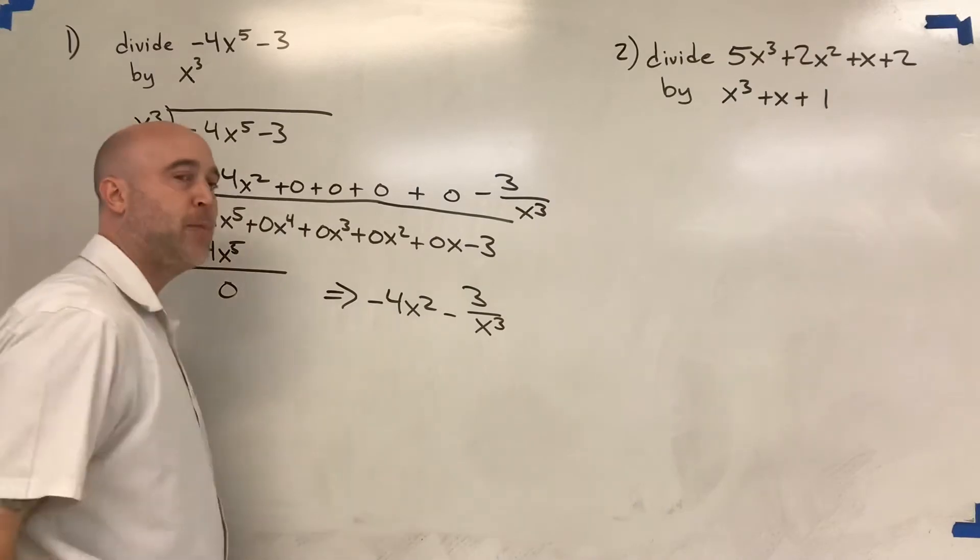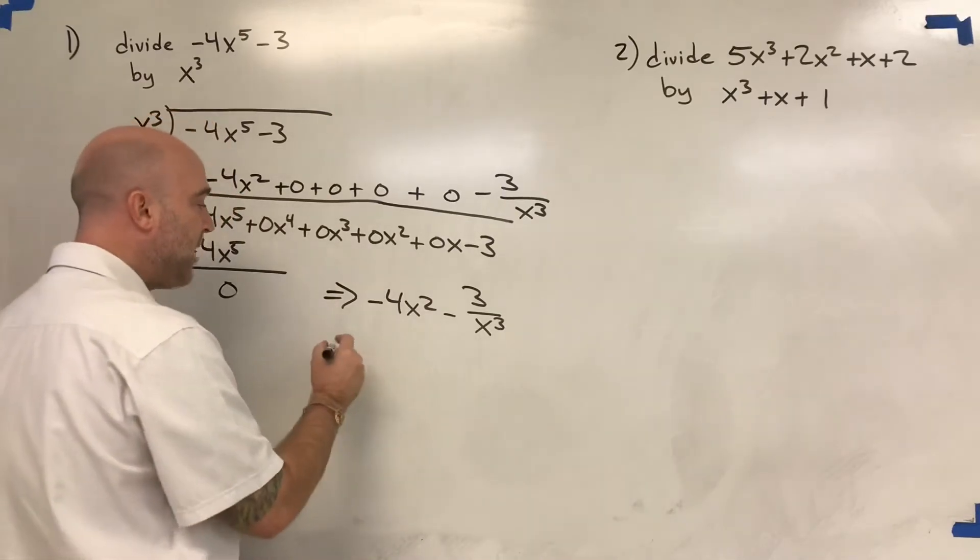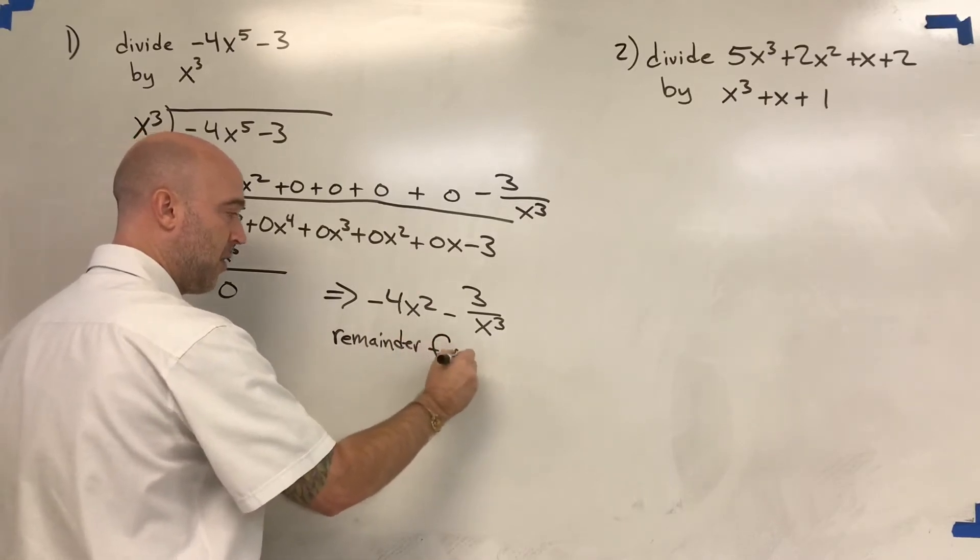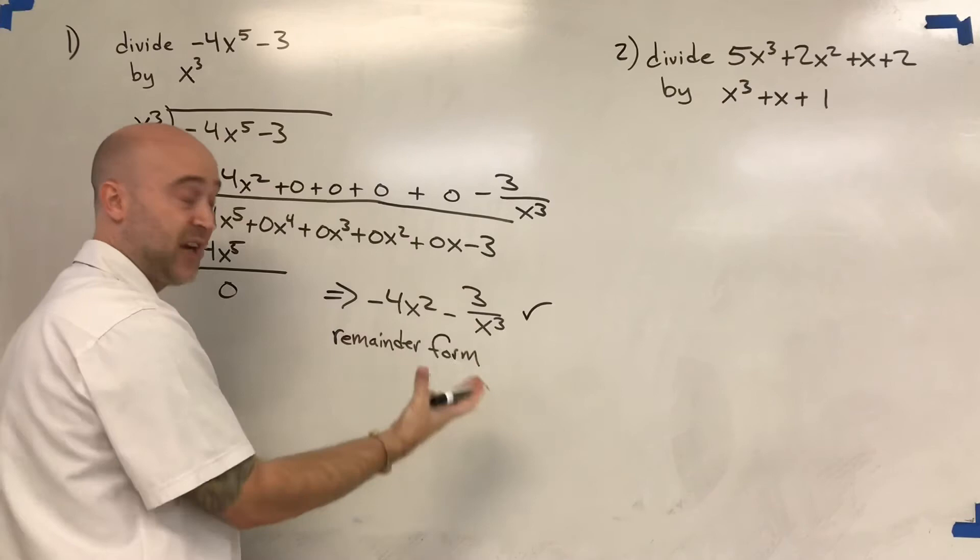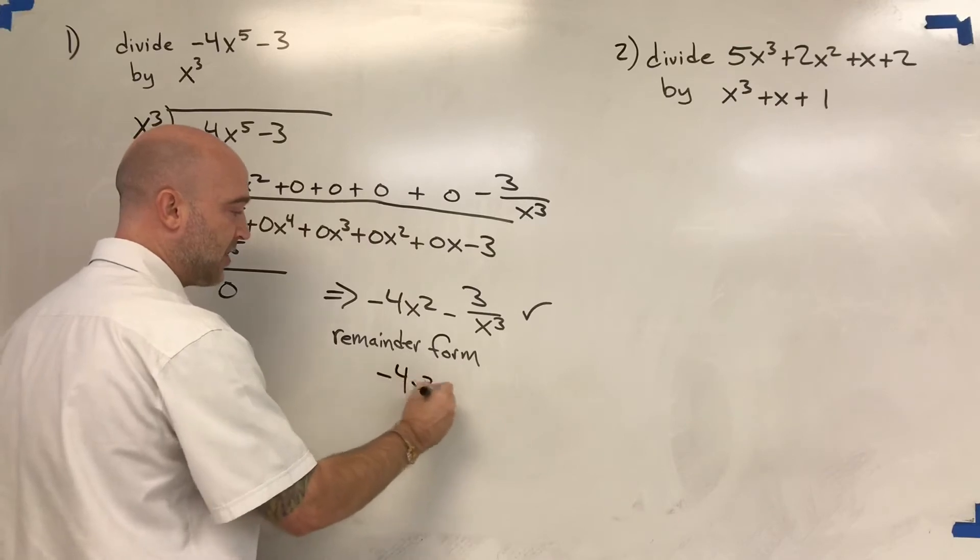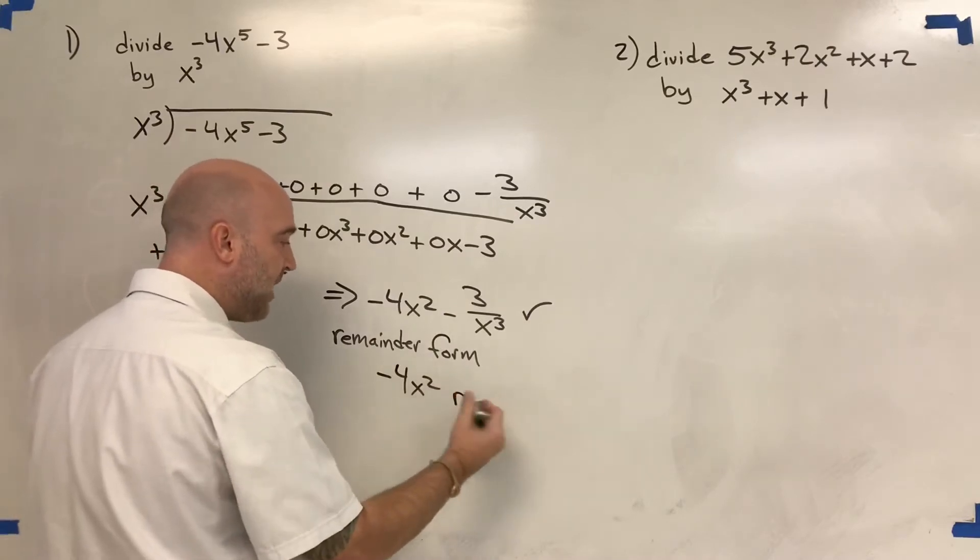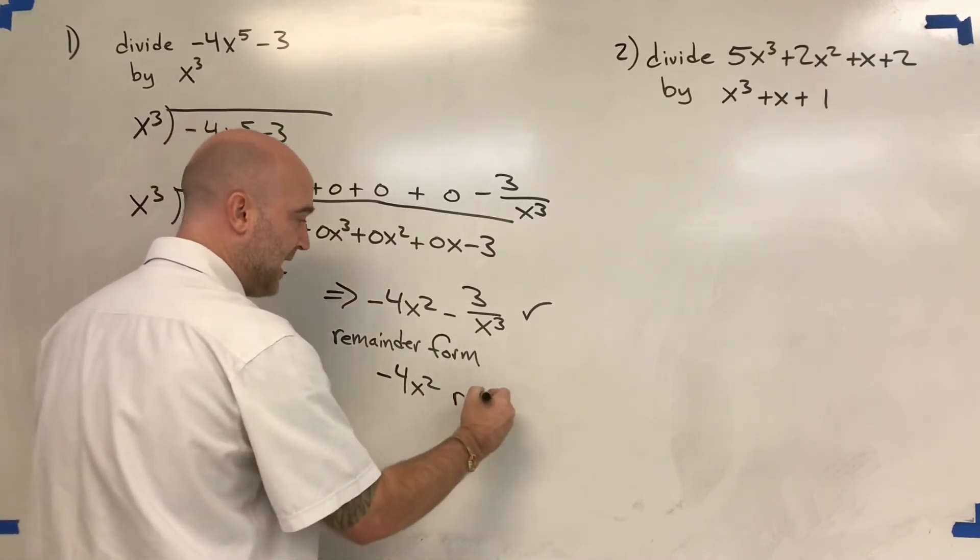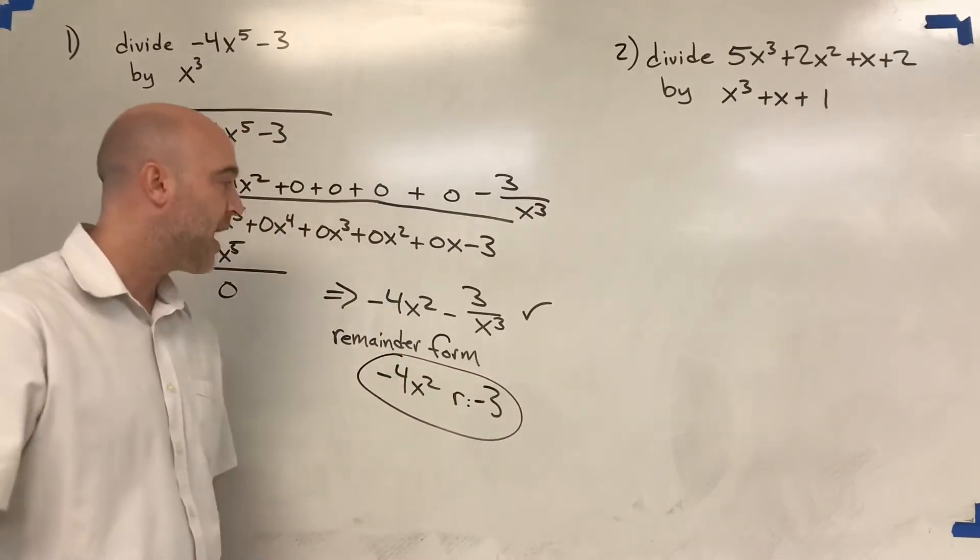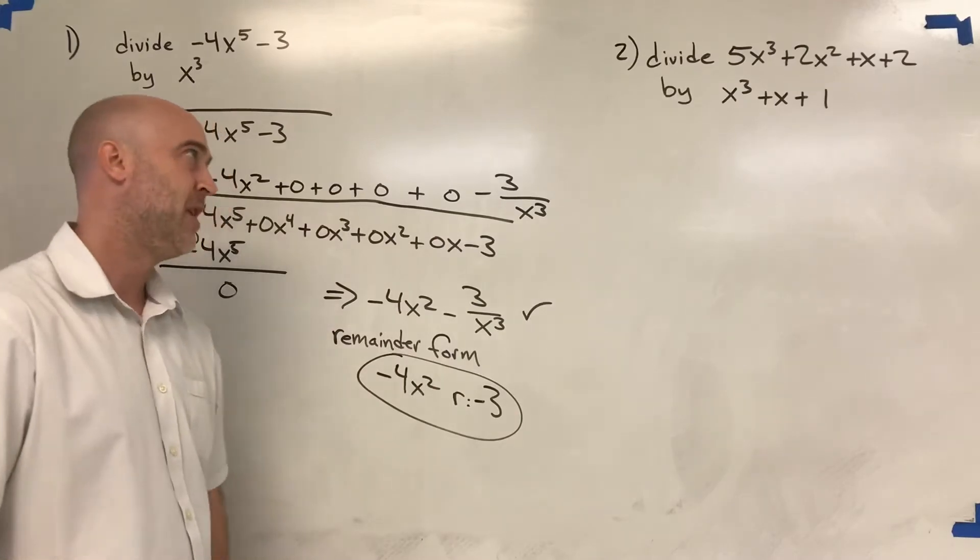Now, on this particular program, they're asking for the remainder itself. So in a remainder form, in the remainder form, this is the best answer, though. This is actually how we would write the answer. But if you want to look at the remainder, we have the negative 4x squared. That's the whole parts. And then the fractional part, the remainder, so I'll put r, is a negative 3. So this would be what we'd submit for the program. But like I said, it's better to kind of write it as a complete statement. So this would be the exact answer.